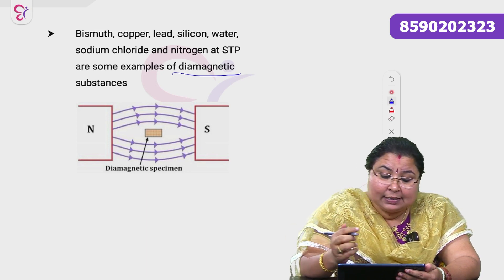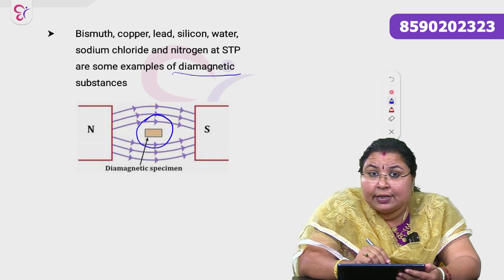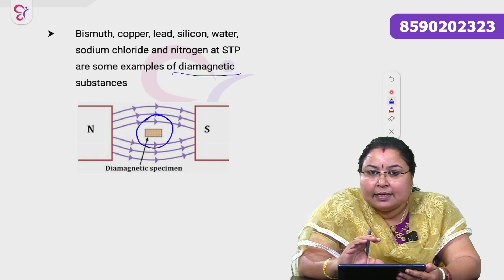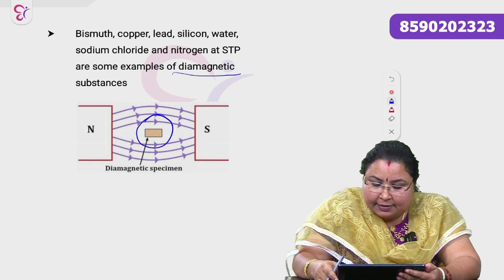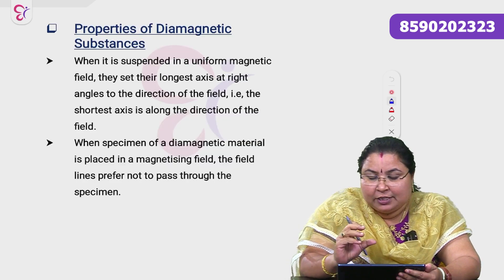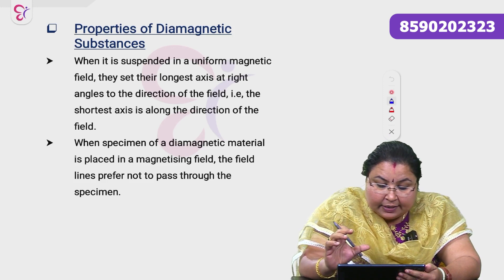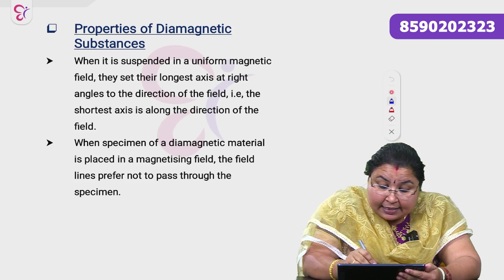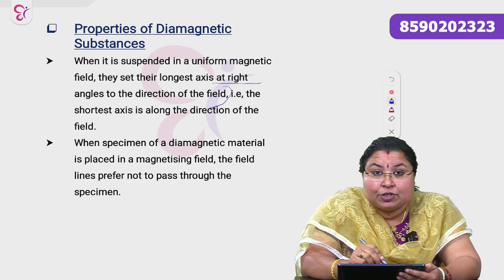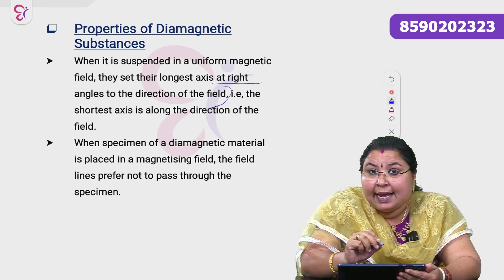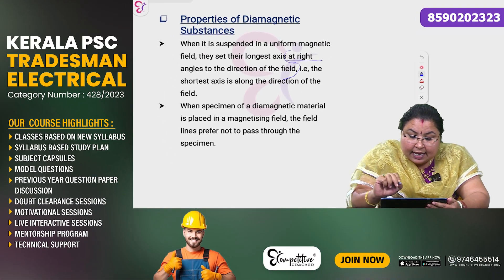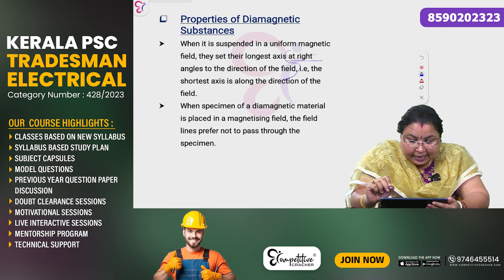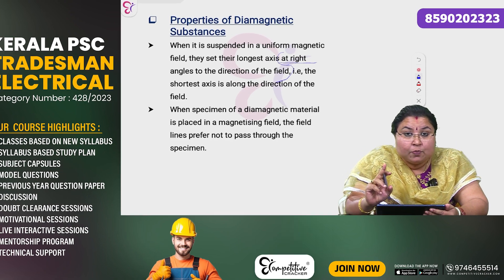When a diamagnetic substance is placed in a magnetic field, the magnetic field lines will not penetrate through it. When suspended in a uniform magnetic field, diamagnetic materials set their longest axis at right angles to the direction of the field — the shortest axis aligns along the direction of the field. When a specimen of a diamagnetic material is placed in a magnetizing field, the field lines prefer not to pass through the specimen.